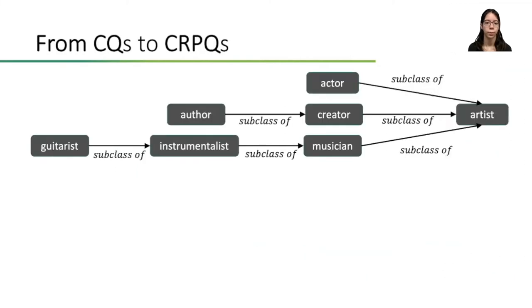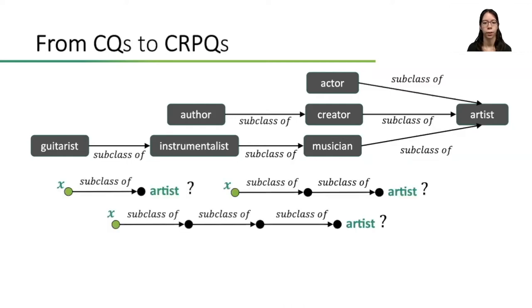In practice, CQs are often too restricted. Suppose that we want to find all types of artists in this graph. Since the lengths of the subclass paths are different, writing a conjunctive query that finds out if an occupation is some subclass of artist is impossible. The reason is that CQs can only query about fixed length paths, but here we have different lengths. Instead, one would need a union of conjunctive queries here, which might be very lengthy since we already need three CQs for this small example.